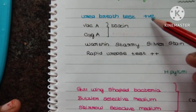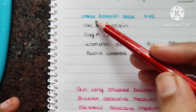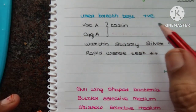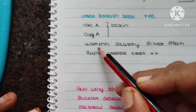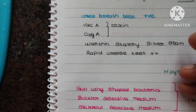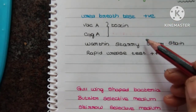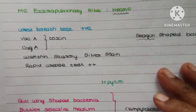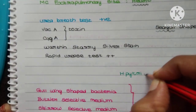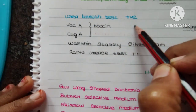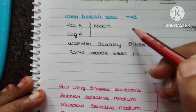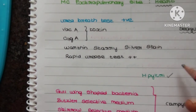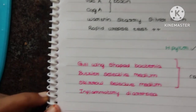The first hint: urea breath test or rapid urease test will be positive. The organism produces toxins, and the key stain is Warthin-Starry silver stain. Most importantly, it is a seagull-shaped bacteria. If you come across these points — urea breath test positive in a patient with gastritis or gastric CA — the organism is H. pylori.